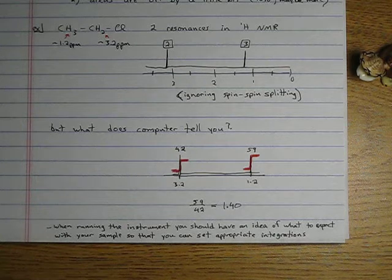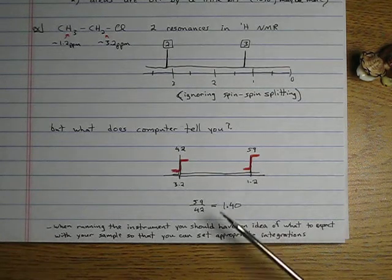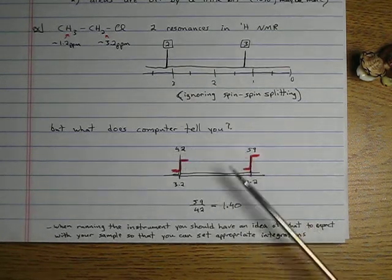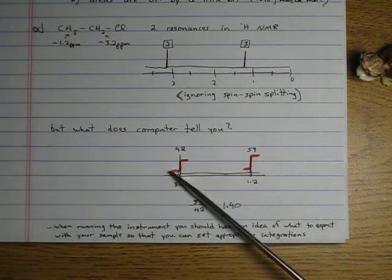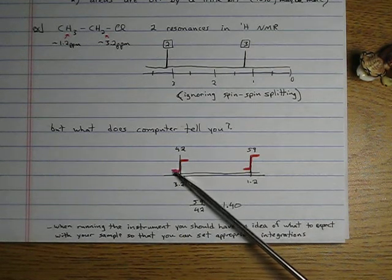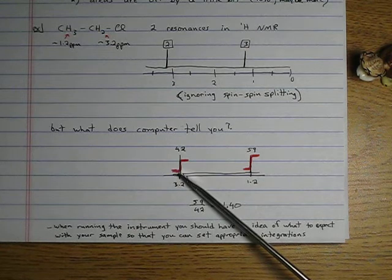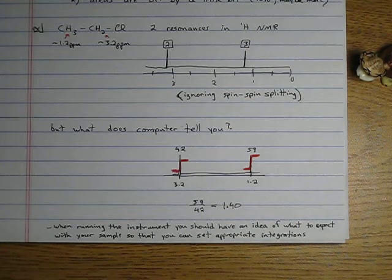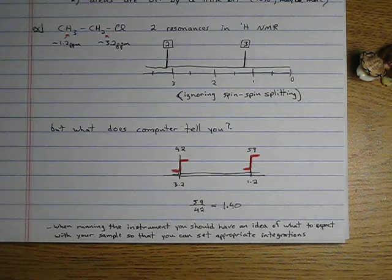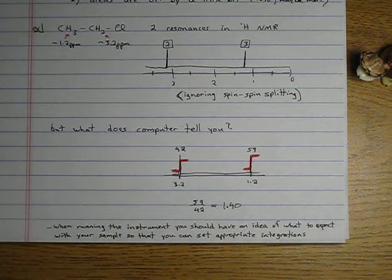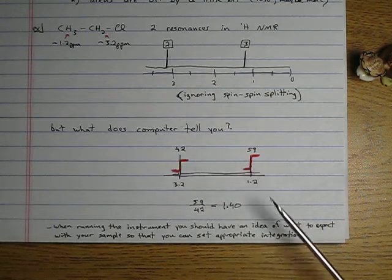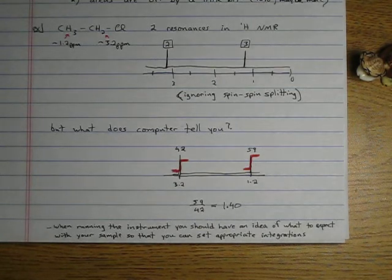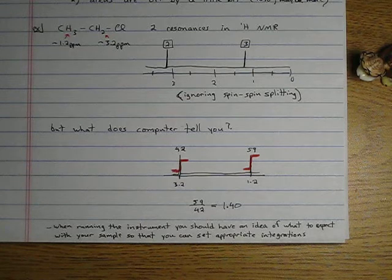So you have two integration methods on this spectrum. You've got the numerical values, the 49, the 52, and you also have the height of these swooshes. The distance from the bottom of the swoosh to the top is also proportional to the number of protons causing the signal. So if you see this 42 to 59, how do you get the proper integral values? How do you come up with the numbers of protons causing each signal?